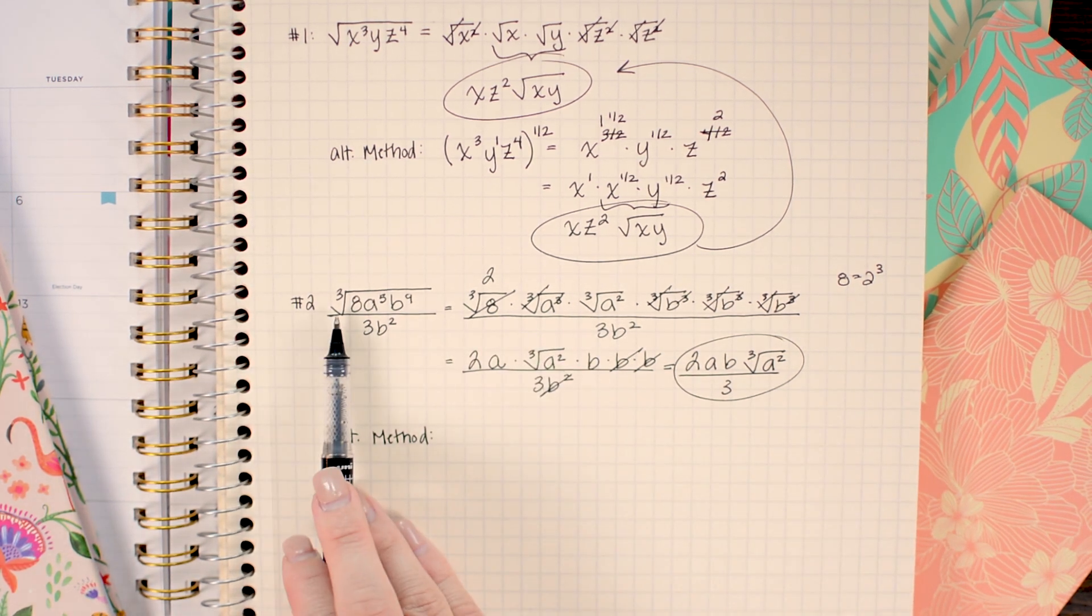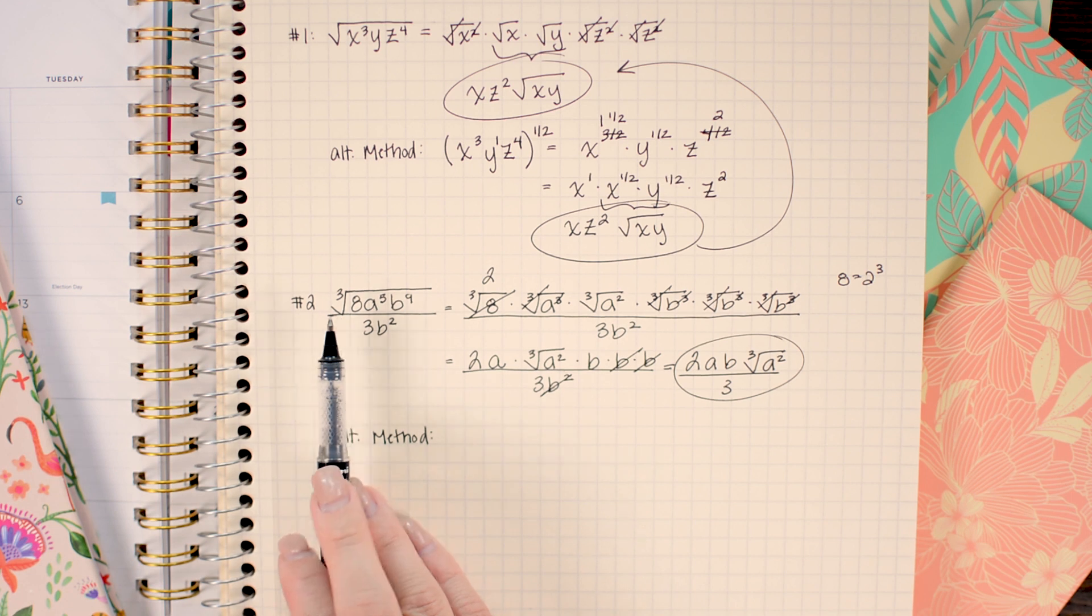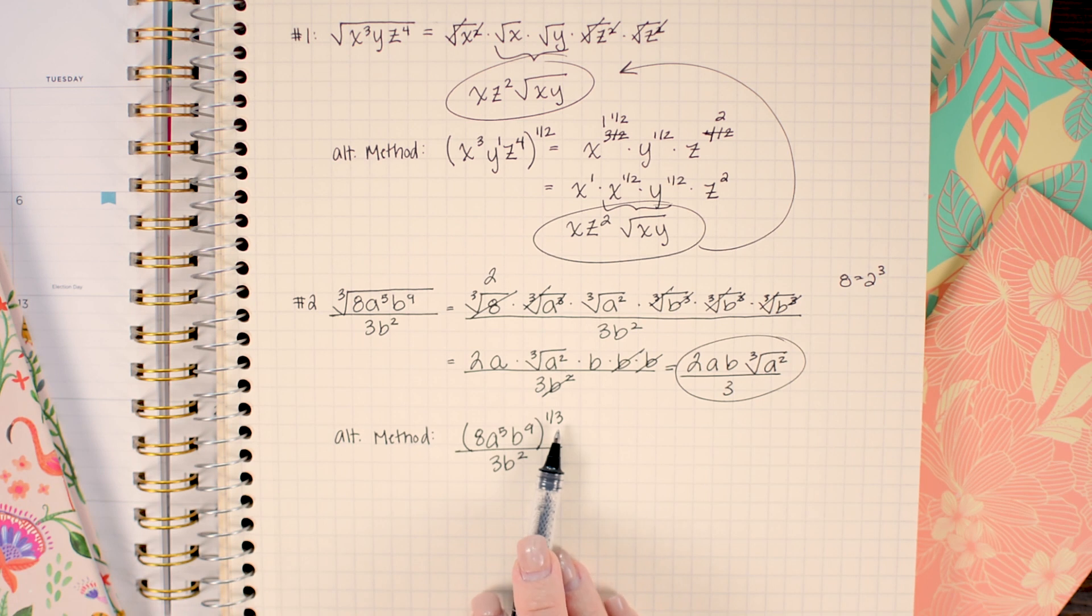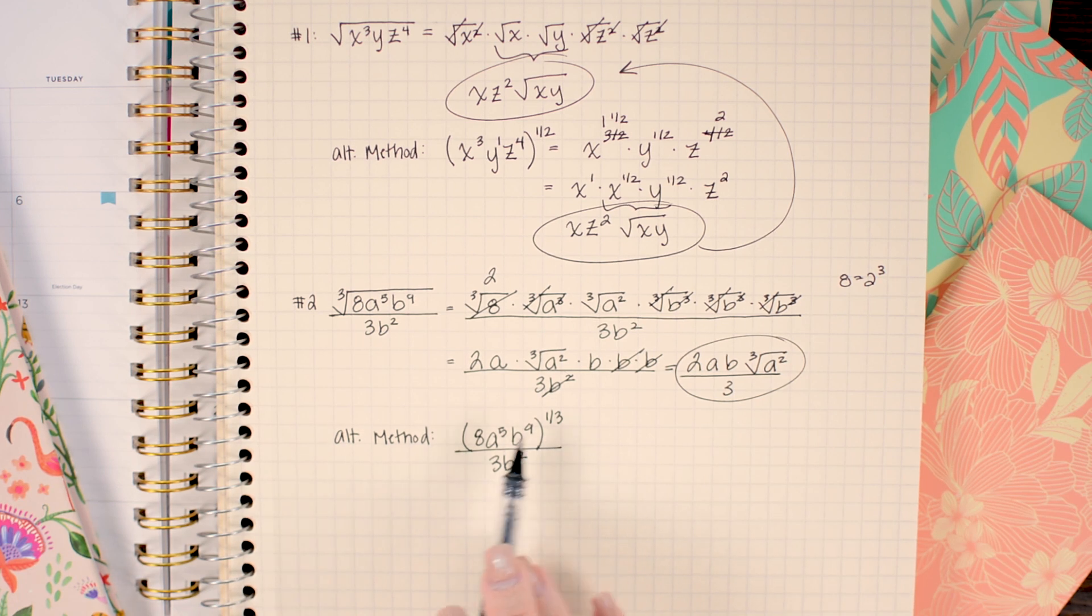In this method, instead of writing a cube root, I'm going to start by trading out the cube root for a power of one third. And I'm going to make sure to wrap parentheses around anything that was inside that cube root. Now I can go ahead and apply the one third power onto each value inside of the parentheses.